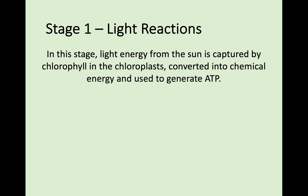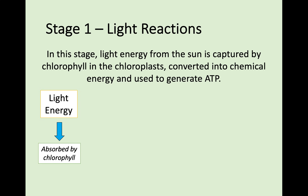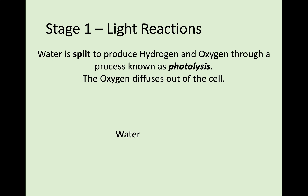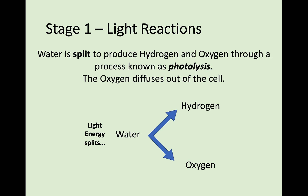Let's look at stage 1 in a bit more detail. This light energy from the sun is captured by chlorophyll, which is found in the chloroplast of plant cells. It is then converted into chemical energy, and this is used to generate ATP, which is the energy for the rest of this process. At the same time, water taken into the plant through its roots — light energy is used to split water into hydrogen and oxygen. The chemical formula of water is H₂O, made up of hydrogen and oxygen, so this light energy splits the H₂O into H and O. This process is known as photolysis, which basically just means light splitting.